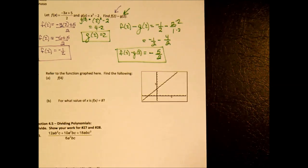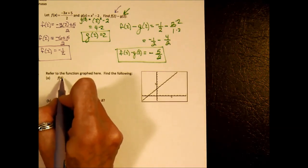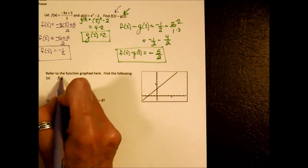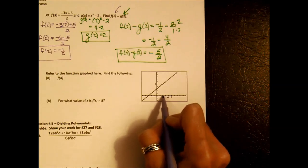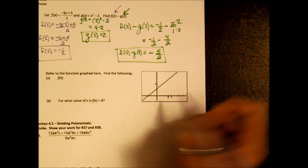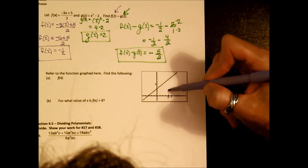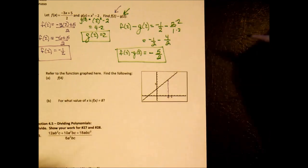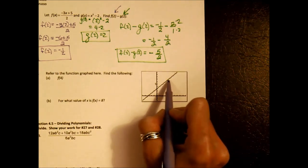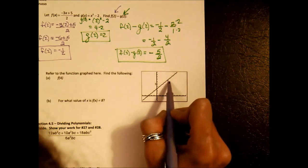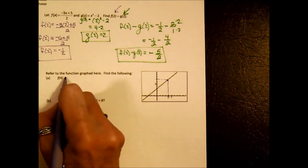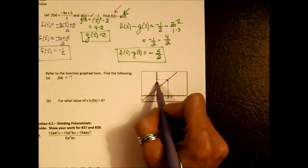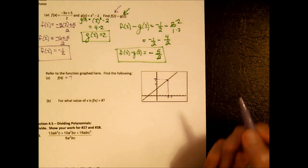Number 12 says refer to the function graphed, find f(4). What's in parentheses represents x, so find where x is 4. Going up to the graph and over, f(4) equals 7.